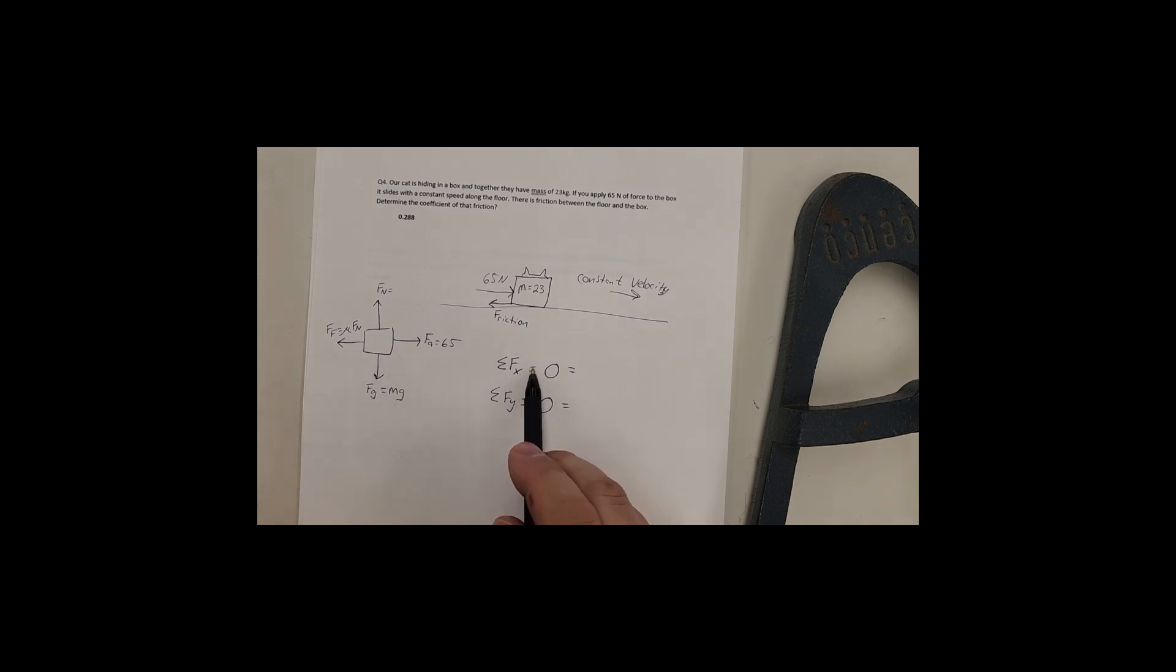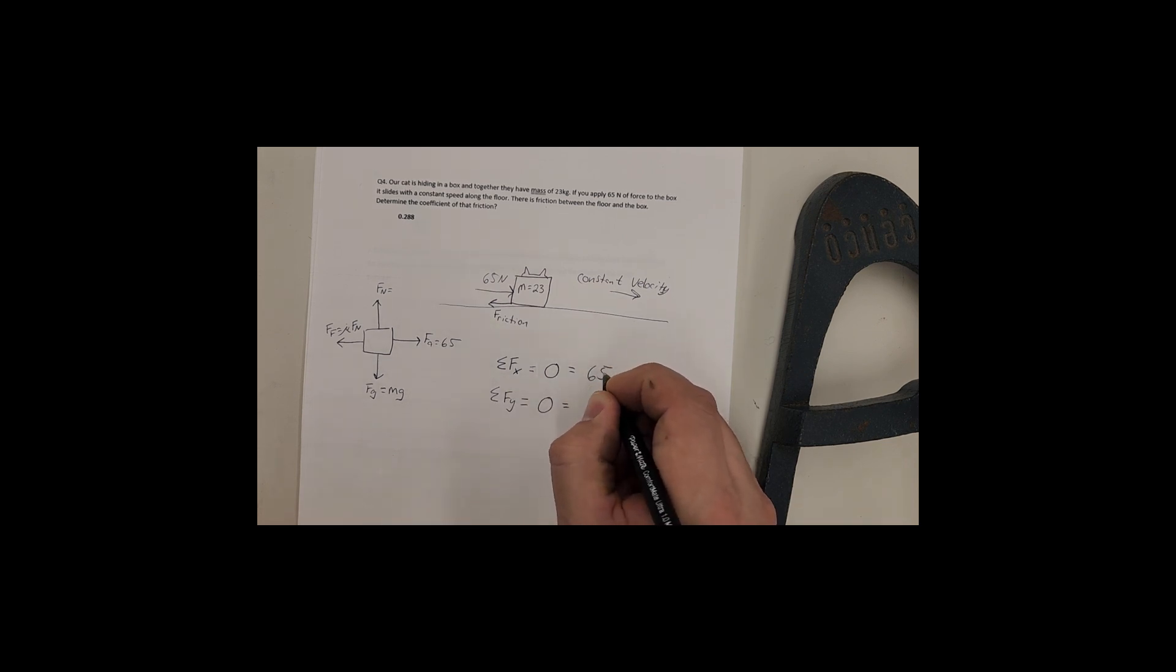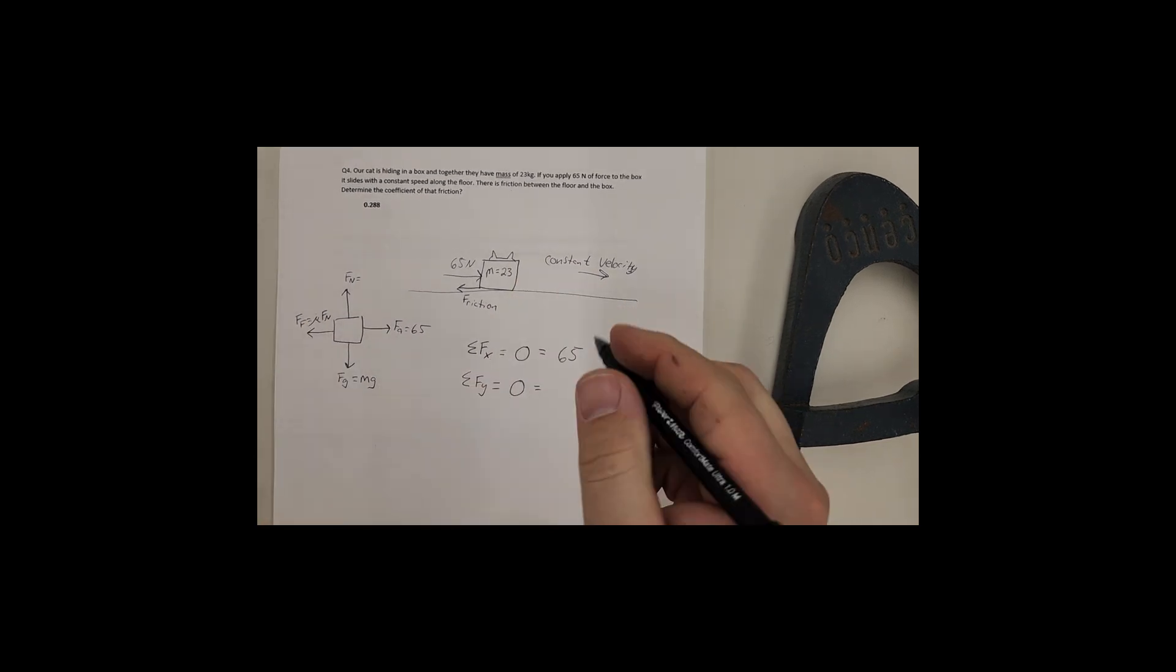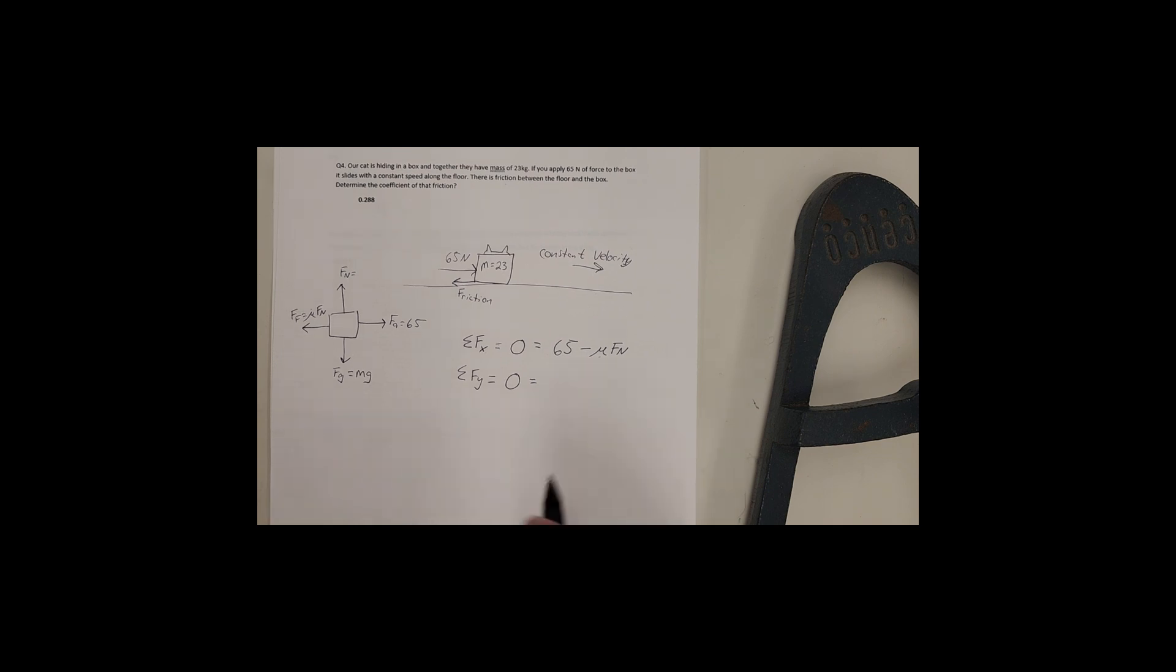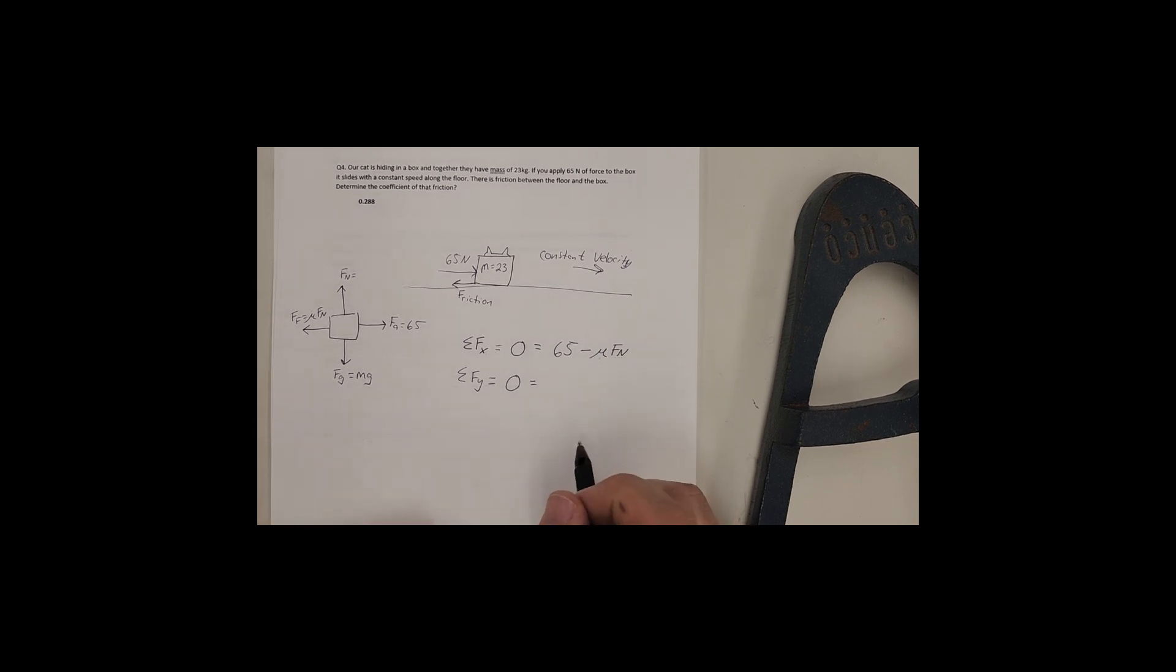So what's the forces in the x direction? We have 65 newtons being pushed in the positive direction. And I have the friction force being in the opposite direction. So I'm going to put that one as a minus. And that one will be a mu f n. Now mu is what we're looking for. That's our coefficient. So if I can figure out what f n is, that then solves my equation. So I've got to find a way to find f n and how to do that as I go through the y.